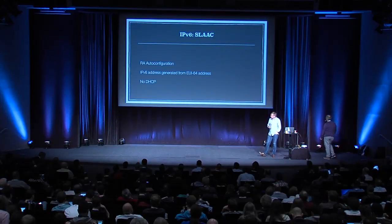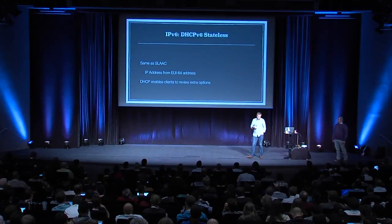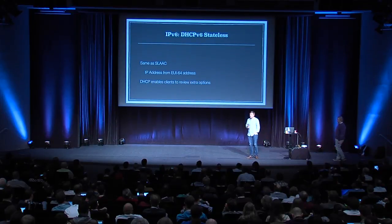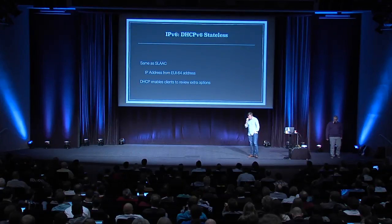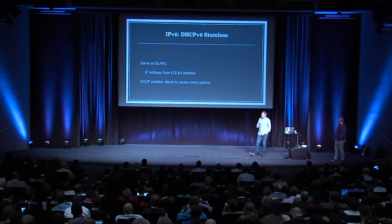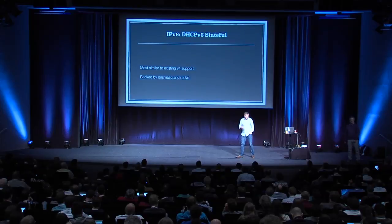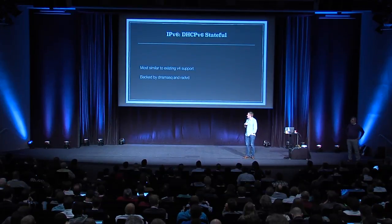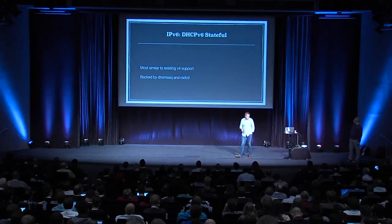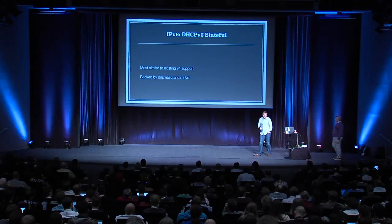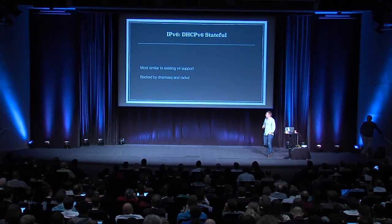In SLAAC mode, we don't run DHCP. In some cases SLAAC doesn't give you the ability to pass enough options to the host, so some people want what we call DHCPv6 stateless: essentially the same configuration as SLAAC, but we stand up a DHCPv6 server so you can pass options not available via router advertisement. The last mode is DHCPv6 stateful, which is very similar to how we do IPv4 today — full DHCP services with configurable options. As VMs boot, they can request any of the options as needed. In this case, we use RADVD on the router and dnsmasq to provide DHCP services.